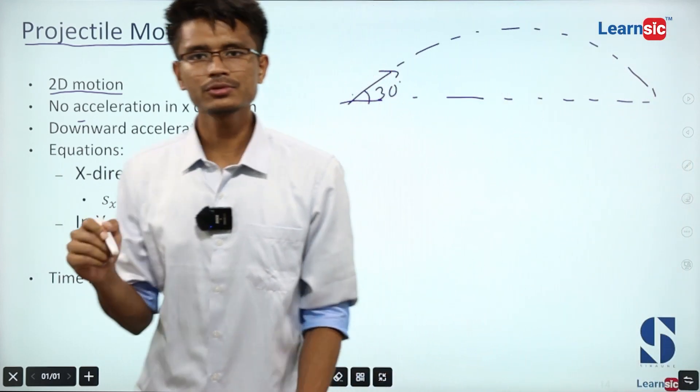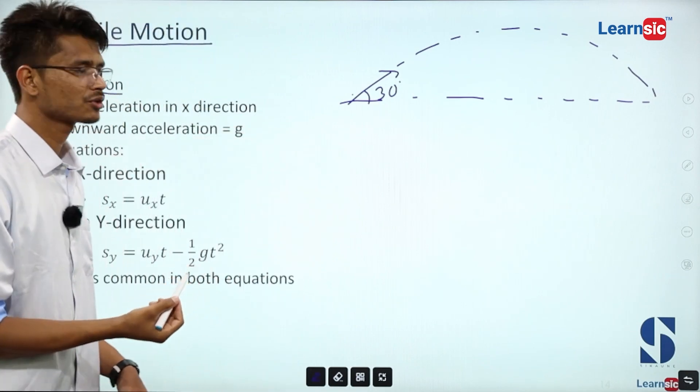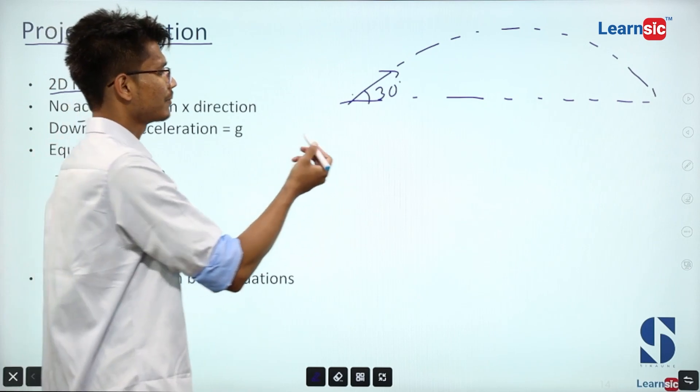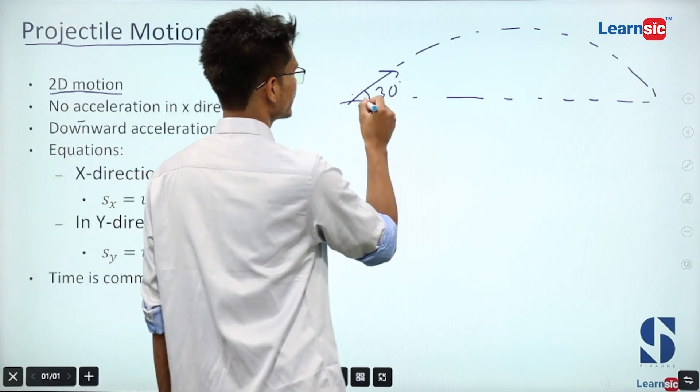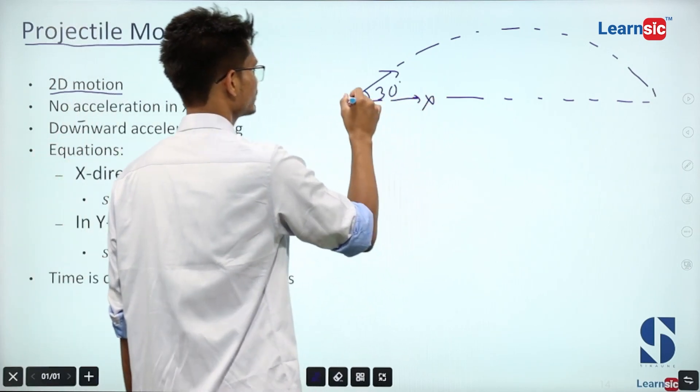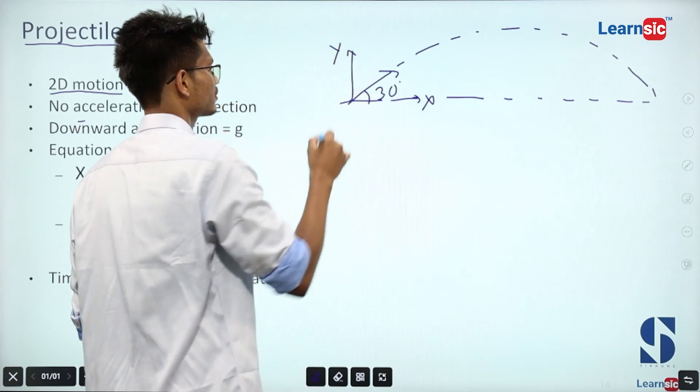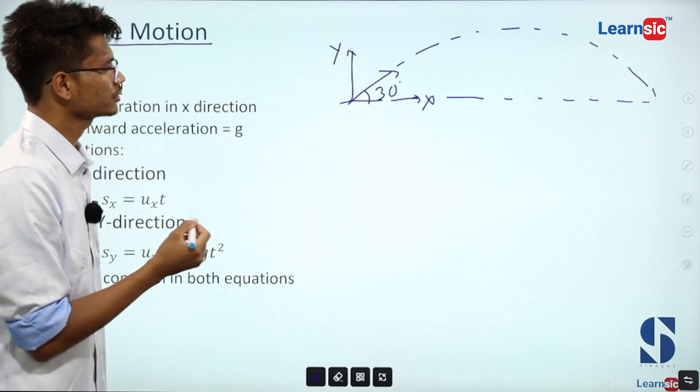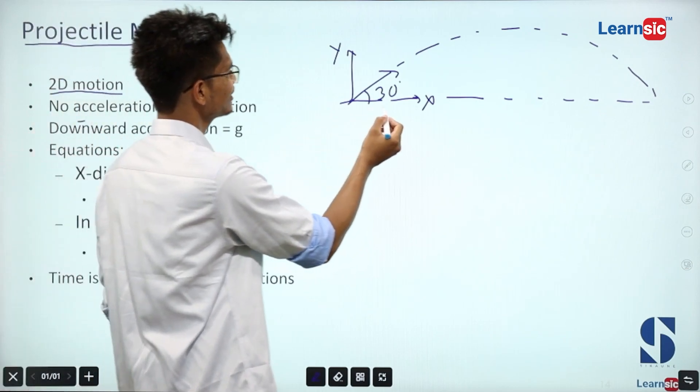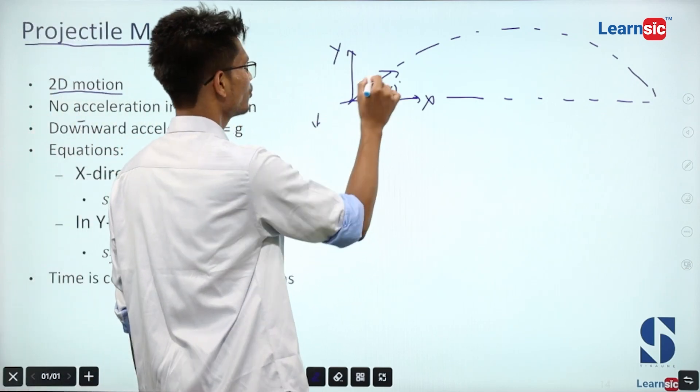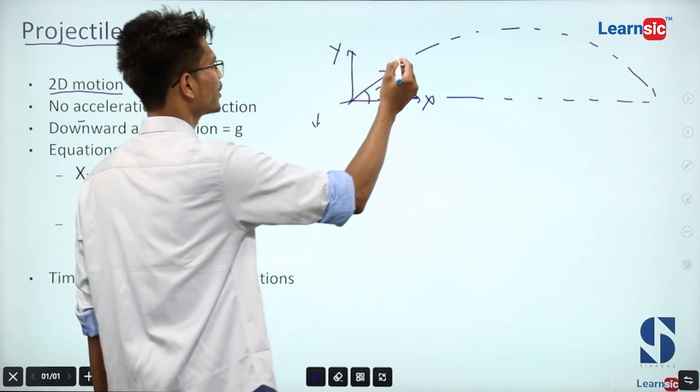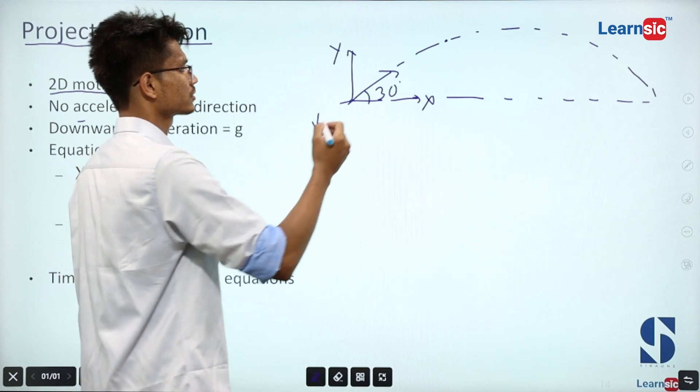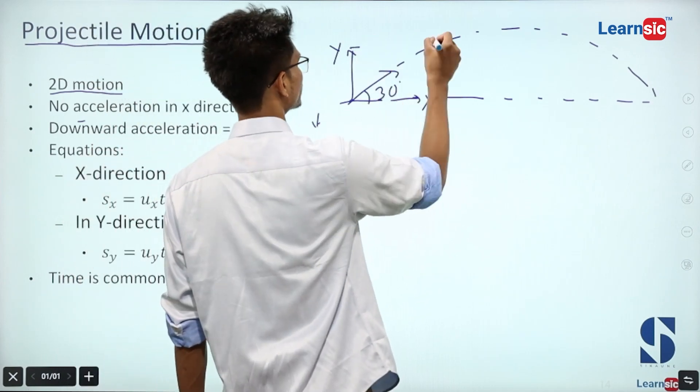In projectile motion, this is a two-dimensional motion. We solve this problem using two sets of equations: x-axis equations and y-axis equations. The path has coordinates - the x-coordinate and the y-coordinate.